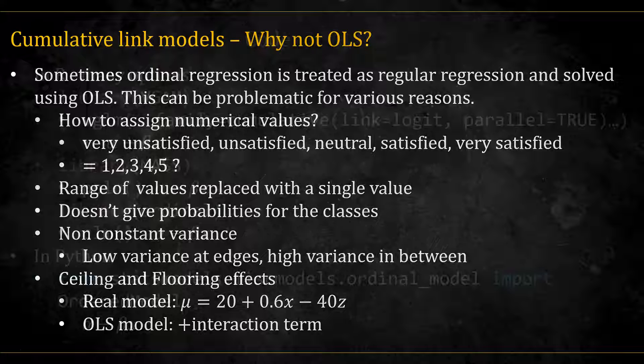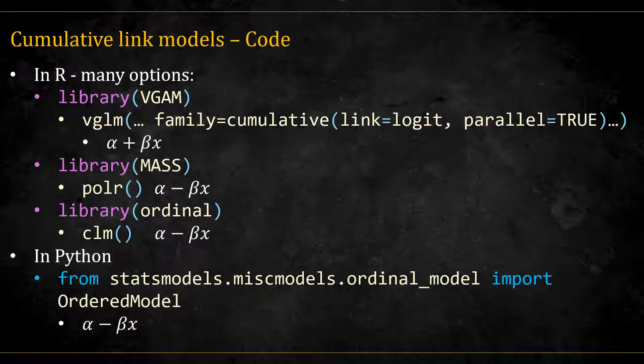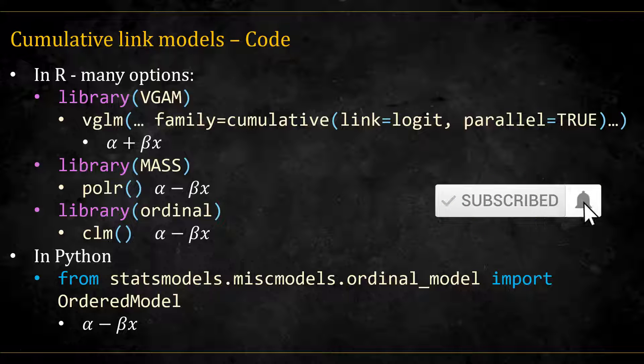Code-wise, there are several libraries that offer fitting cumulative link functions. We can use the vglm function from the vgam library and specify the family as cumulative and also the link. We need to specify parallel equals true if we want the same slopes. There are also the polr function from the mass library and the clm function from the ordinal library. And in Python, there's ordered model from the stats models library. Note that except for vglm, which reports beta coming from alpha plus beta times x model, the rest of the implementations use alpha minus beta times x.